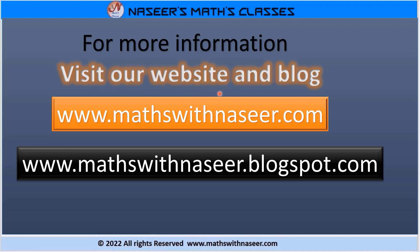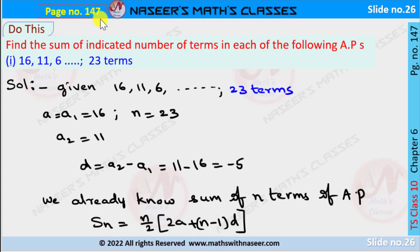For more information visit our website www.mathswithnasir.com. We are doing page number 147, Chapter 6: Progressions — find the sum of the indicated number of terms in each of the following. AP means arithmetic progressions. The first series is 16, 11, 6, and so on, and we have to find the sum of 23 terms.